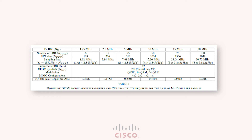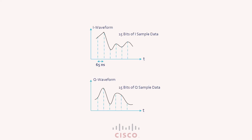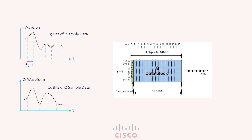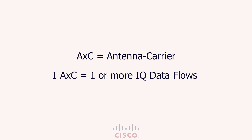As we learned in the first video, the fronthaul bandwidth is deduced from the user plane data carried in CPRI. This user plane data is transported in the form of one or many in-phase and quadrature data flows. Each IQ data flow reflects the radio signal sampled and digitized of one carrier at one independent antenna element, and we call this an antenna carrier, represented as AXC.